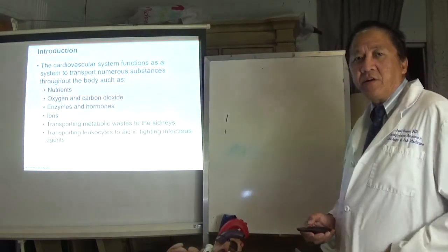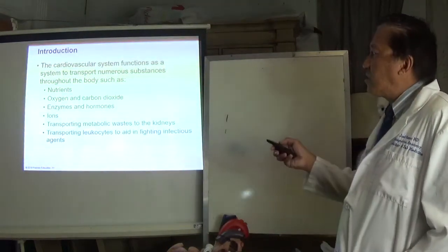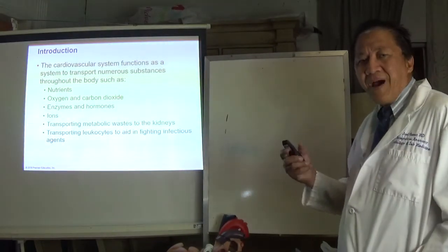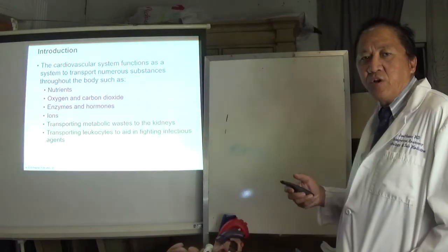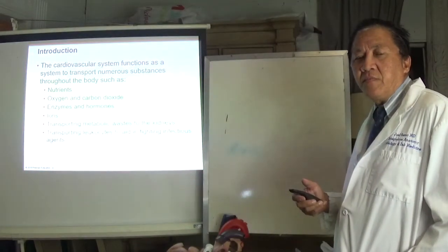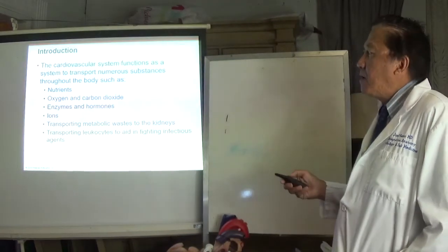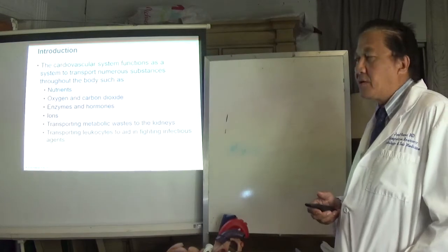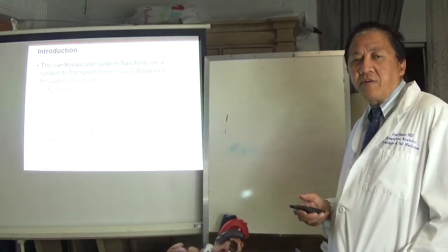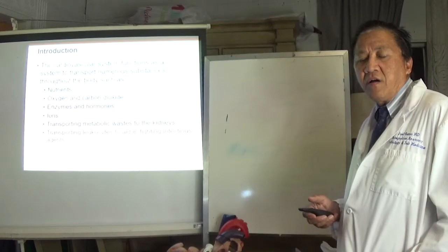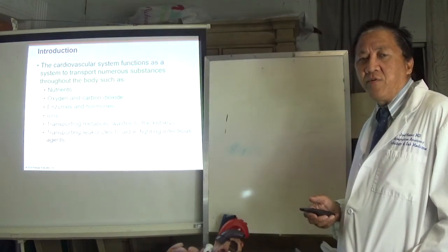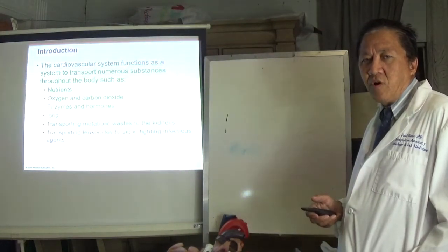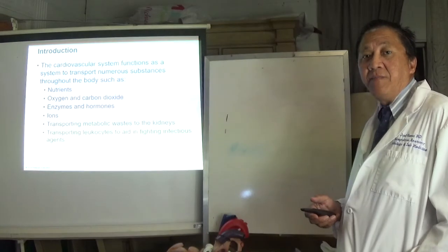In this particular slide you can see a list of the functions of the human blood with regards to its capacity to transport nutrients such as glucose, proteins, and lipids or fats. Oxygen and carbon dioxide are transported through the red blood cell. Hormones are produced by endocrine glands and because endocrine glands do not have ducts they release hormones directly into the blood circulation, flowing inside the blood vessels.